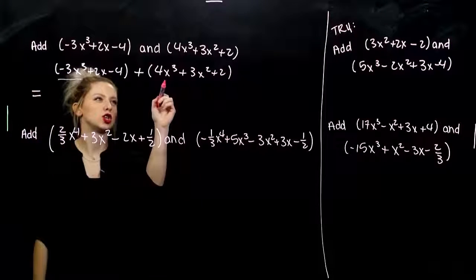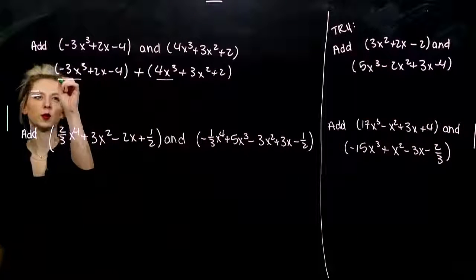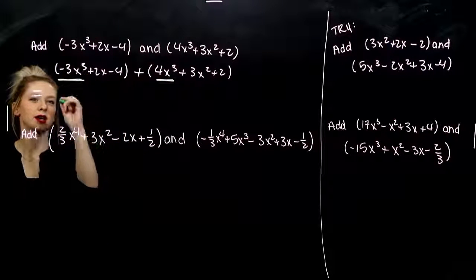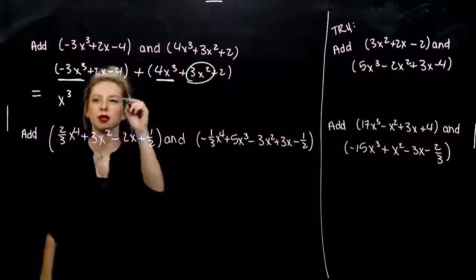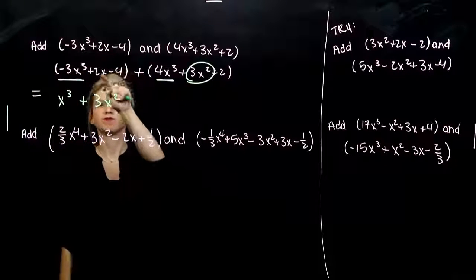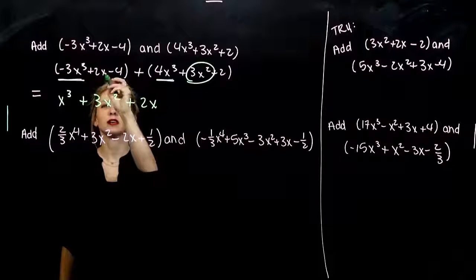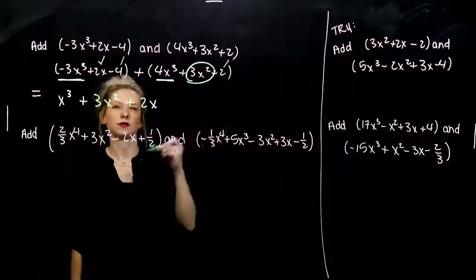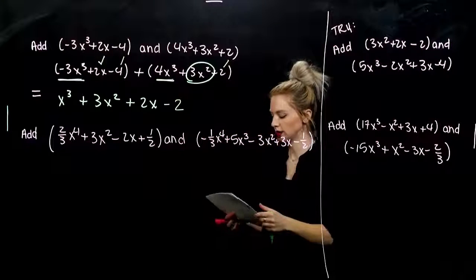How many x cubed am I going to have? I've got negative 3 and positive 4 coming from the second one, so 1 x cubed. For x squared, he doesn't have any buddies, so I'm adding 3x squared. Then 2x. And lastly our constants: negative 4 and positive 2 combine to negative 2. We write it in descending order, combining like terms.